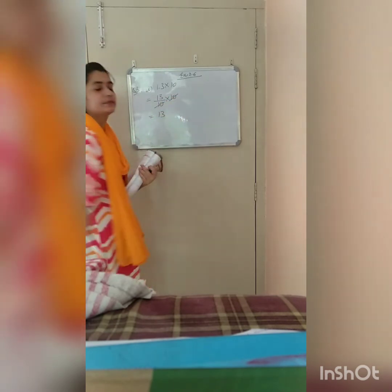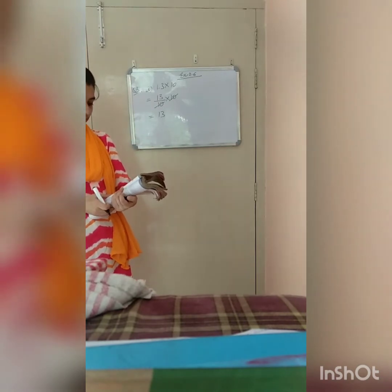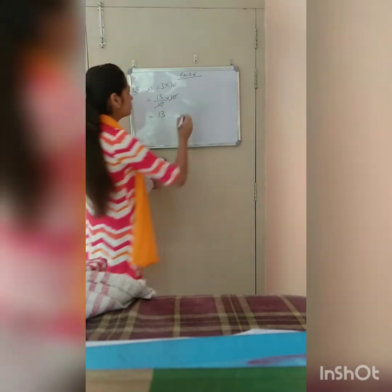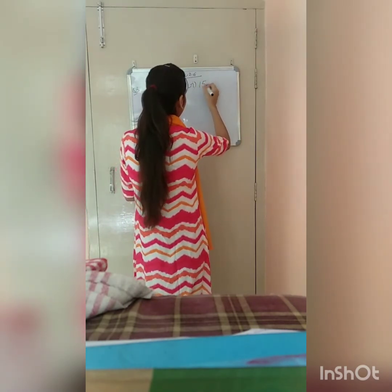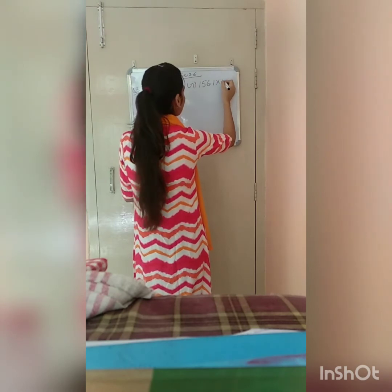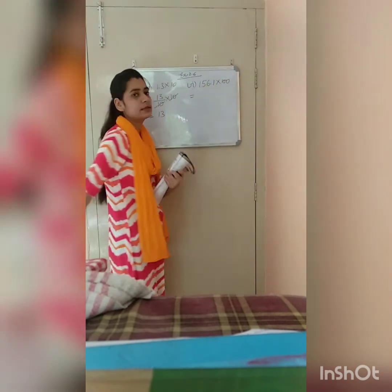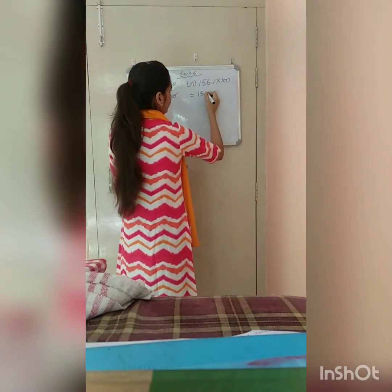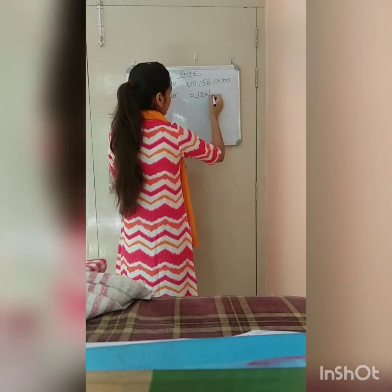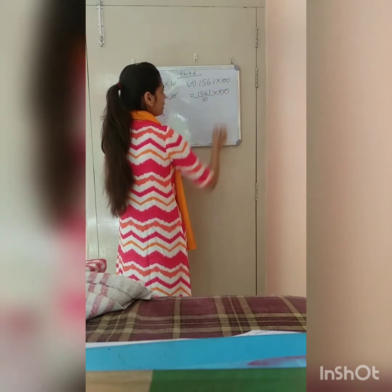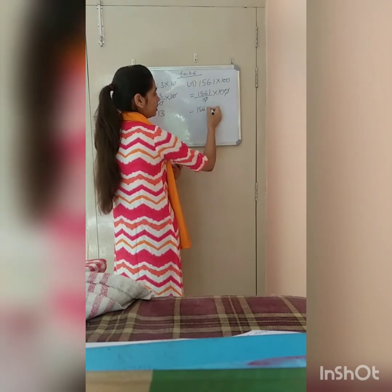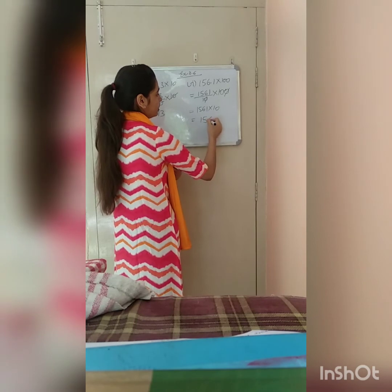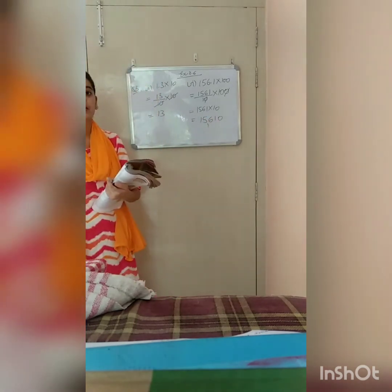The answer is 13. Let's take part 6: 156.1 into 100. We will convert this decimal into a fraction, and it will become 1561 upon 10, into 100. Now we will cancel this 10 with 10, and multiply the remaining thing. It will come out to be 1561 upon 10, which equals 15610.